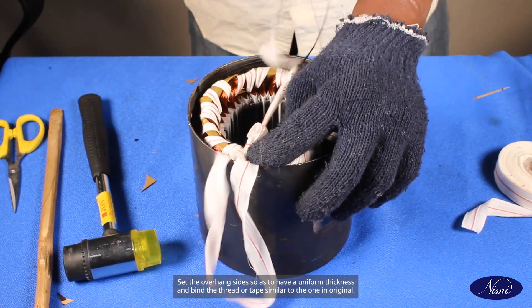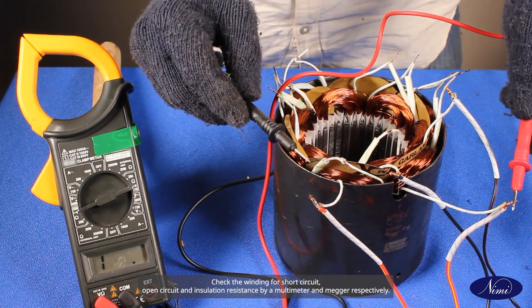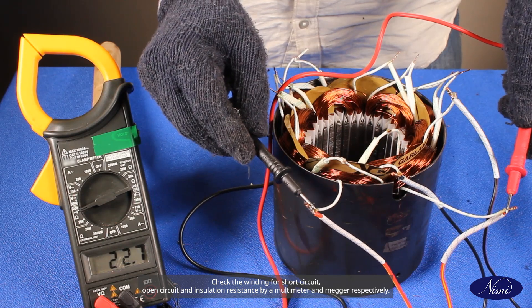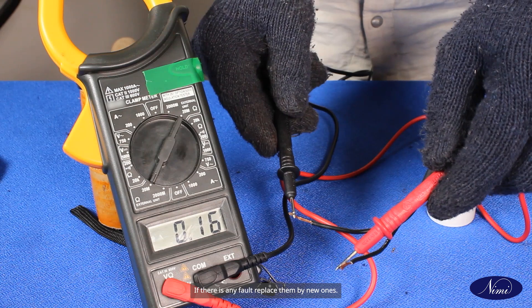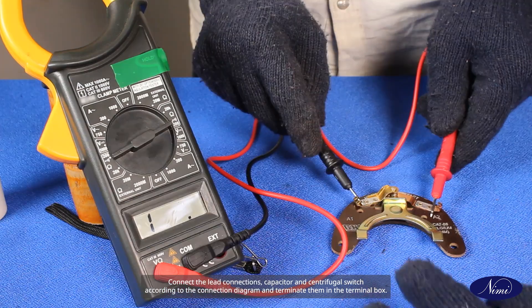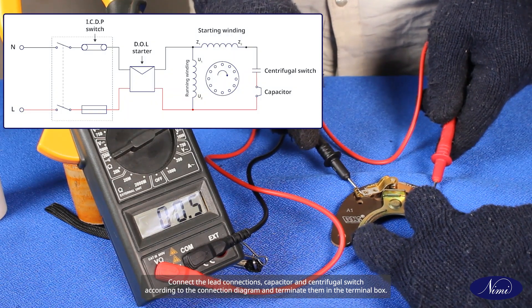Test the winding. Check the winding for short circuit, open circuit, and insulation resistance by a multimeter and megger respectively. Check the condition of the capacitor and centrifugal switch. If there is any fault, replace them by new ones. Connect the lead connections, capacitor, and centrifugal switch according to the connection diagram and terminate them in the terminal box.